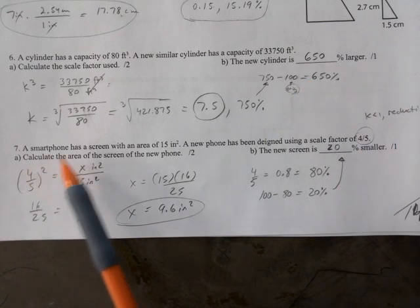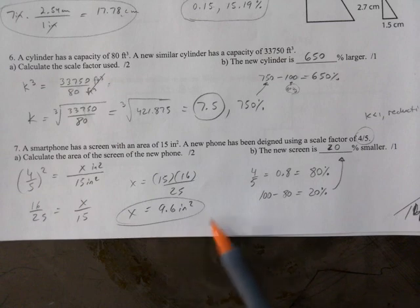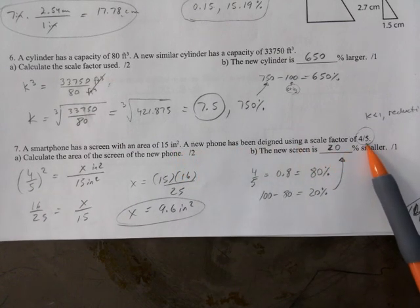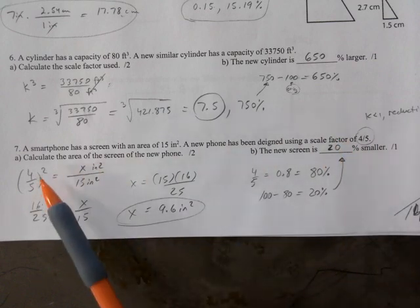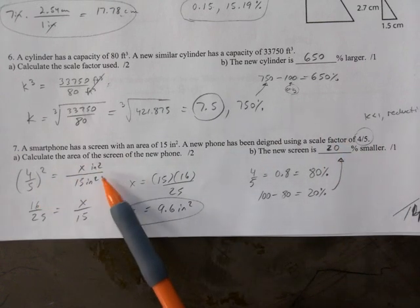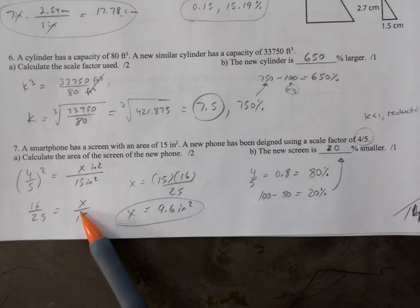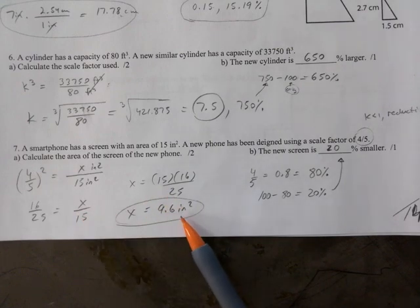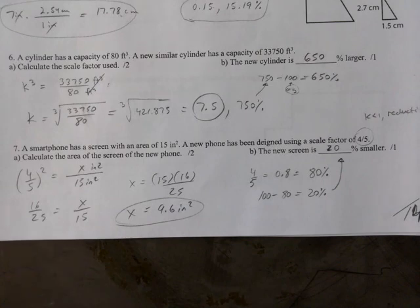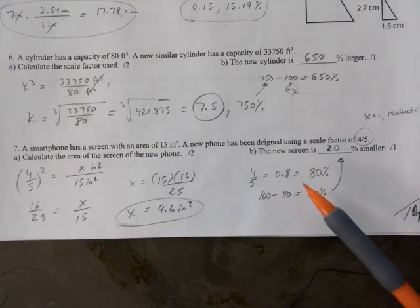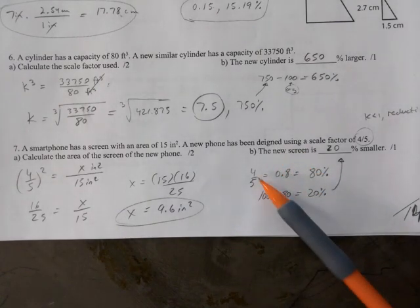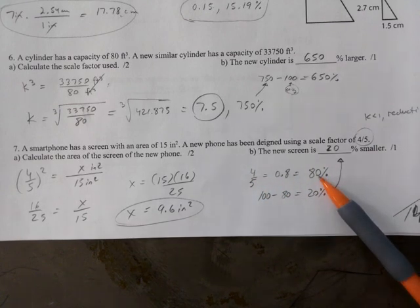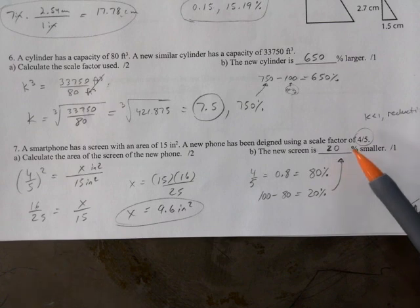The smartphone, also this one was done very well. We're talking areas - there's your scale factor. So we square it because we have area here. Very well done, please don't forget that. 9.6 inches squared is the area of this new screen. Because your scale factor is 4 over 5, it's 80, which means there's a 20 reduction from the original.